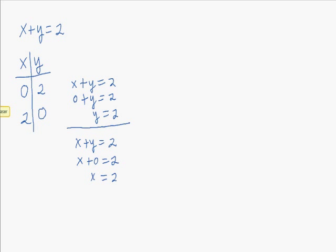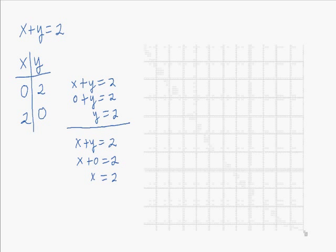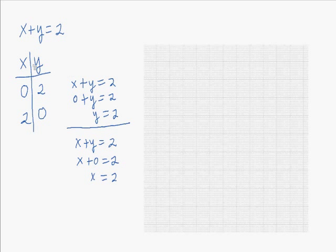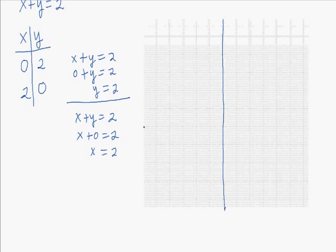Let's go ahead and make a graph using our two ordered pairs. So we'll draw our xy axes. There's the x, there's the y.